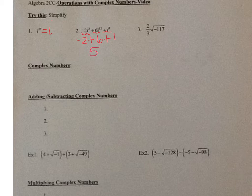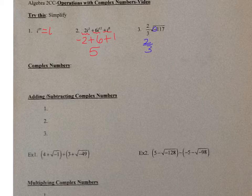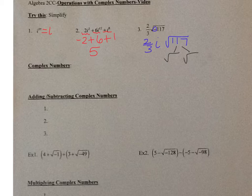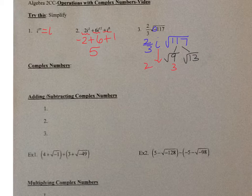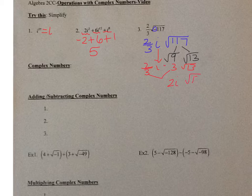Now we have number 3: two-thirds times the square root of negative 117. The first thing is we take that negative and make it i. So it's two-thirds i times the square root of 117. Now we simplify the square root of 117 — the largest perfect square that goes into 117 is 9, and 9 times 13 is 117. The square root of 9 is 3. So we have two-thirds i times 3 times the square root of 13, and two-thirds times 3 is 2. So the answer is 2i times the square root of 13.